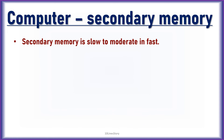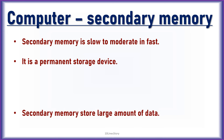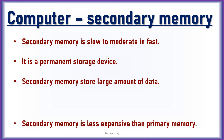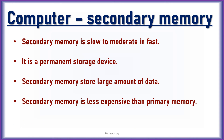Secondary memory is slow to moderate in speed. It is a permanent storage device. Secondary memory stores a large amount of data. It is less expensive than primary memory and is accessible by users. So keep watching Tenline Story Channel.